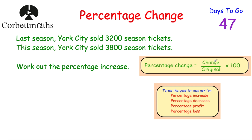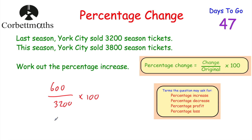To find the percentage increase, we need the change — that's what it's gone up by. So 3,800 take away 3,200 equals 600. The change is 600. Divided by the original, which was 3,200 last season, then multiplied by 100. Typing 600 over 3,200 times 100 into our calculator gives us 18.75%. So the increase in season ticket sales was 18.75%. Well done if you got that.